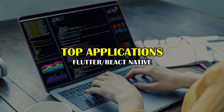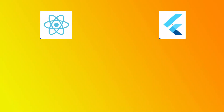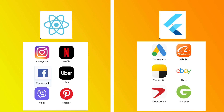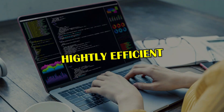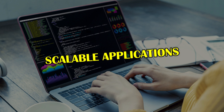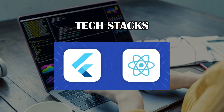Looking at top apps built on these frameworks: Google Ads, Alibaba, and eBay are built with Flutter, whereas Facebook, Instagram, Pinterest, and many more use React Native. The popularity of both frameworks shows that we can build highly efficient and scalable apps with both of these popular tech stacks.